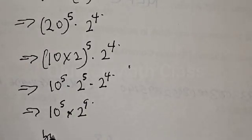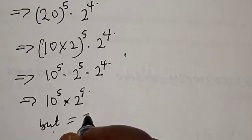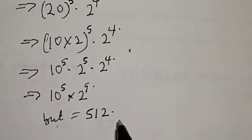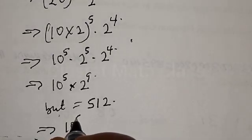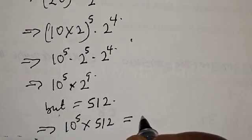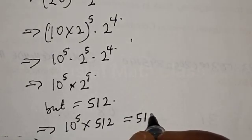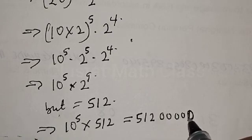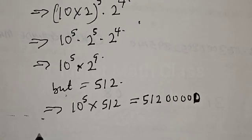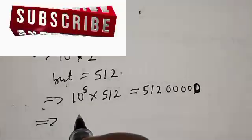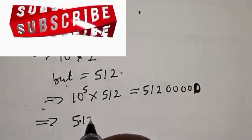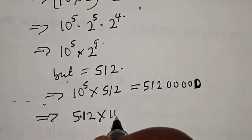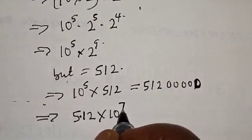Now, 2 raised to the power 9 is equal to 512. This implies that we have 10 raised to the power 5 multiplied by 512, which equals 51,200,000. Our final answer is 5.12 times 10 raised to the power 7.